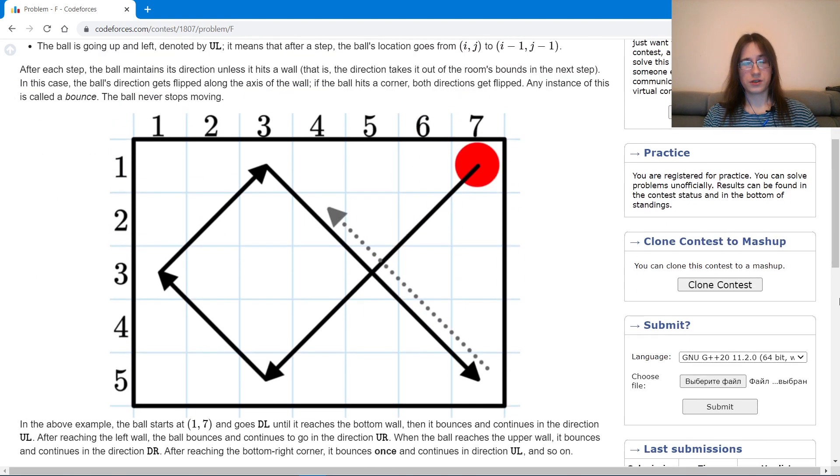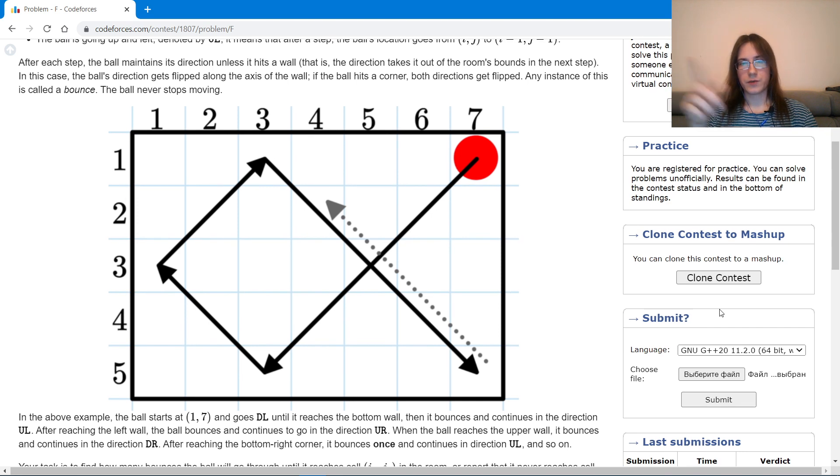In my explanation we have a table of size n by m and a ball of width 1 which is located in some cell of the table given in the input, and it goes in one of the four diagonal directions also given in the input. And it bounces off walls and angles. You need to calculate the minimal number of bounces it will make until it gets to some given point also given in the input.